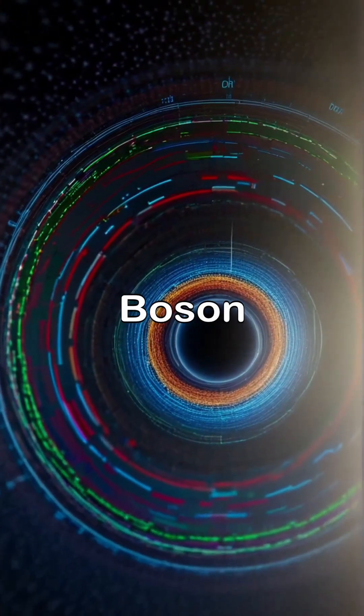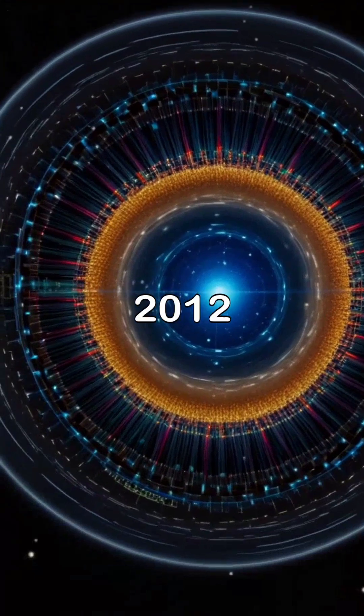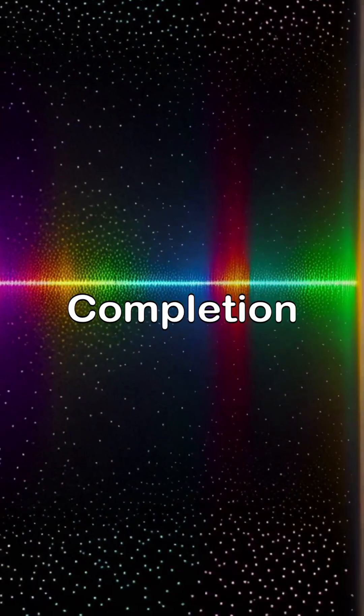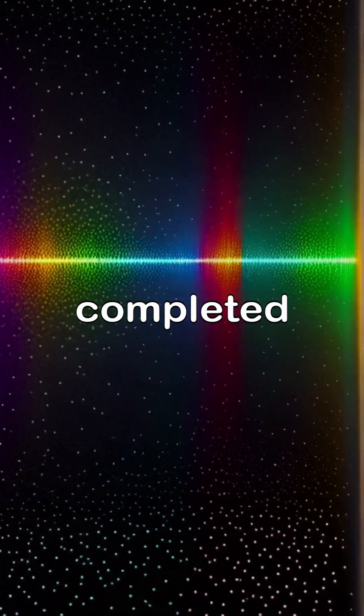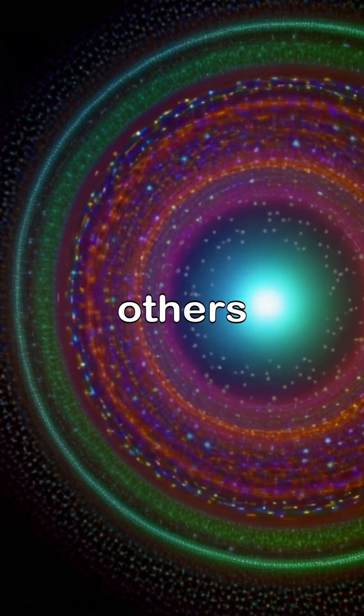Higgs boson: The Higgs particle is a quantum excitation or ripple of the Higgs field discovered at CERN in 2012, proving the field's existence. Standard model completion: Its discovery completed the standard model, explaining why some fundamental particles have mass while others don't.